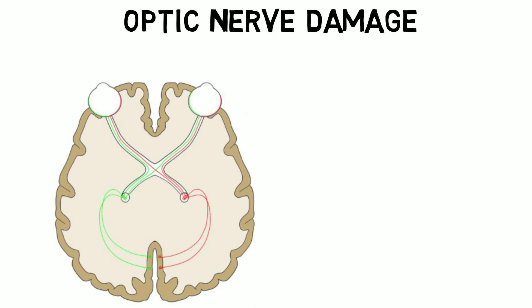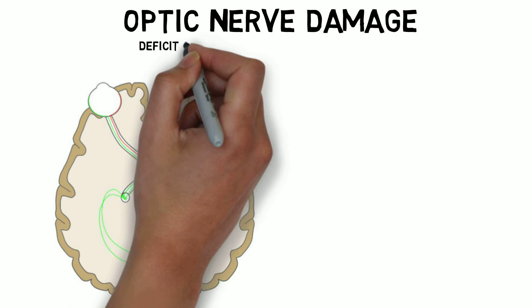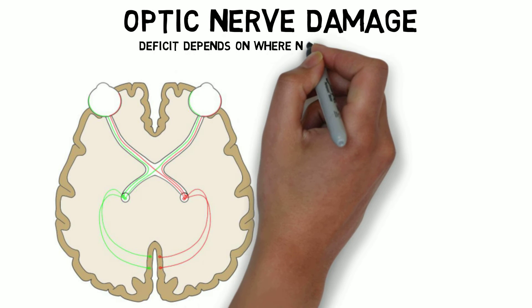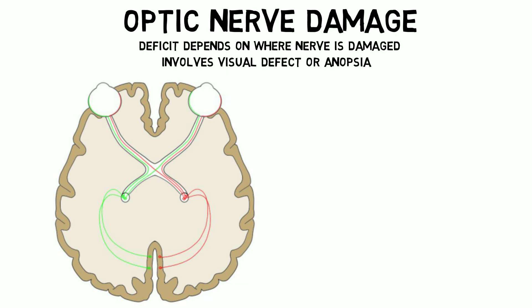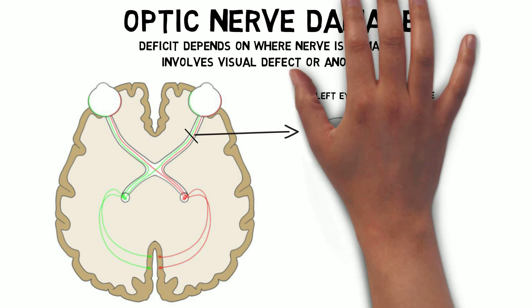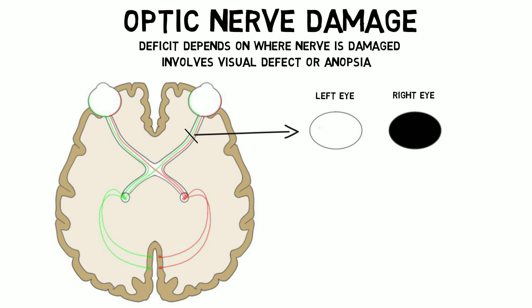Damage to the optic nerve can occur due to a variety of causes like trauma, tumors, stroke, or glaucoma. The deficit that occurs after damage depends on where the nerve is damaged and involves some degree of visual defect or anopsia. If the damage occurs before the optic chiasm, then the patient will experience blindness in the eye supplied by that optic nerve.